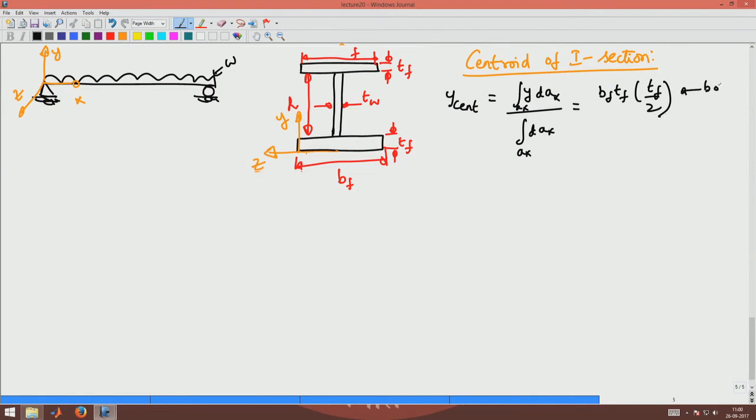Plus I have H times Tw times (Tf by 2 plus H by 2), this would be for the web plate, plus Bf times Tf times (H plus Tf plus Tf by 2), this is for the top plate.